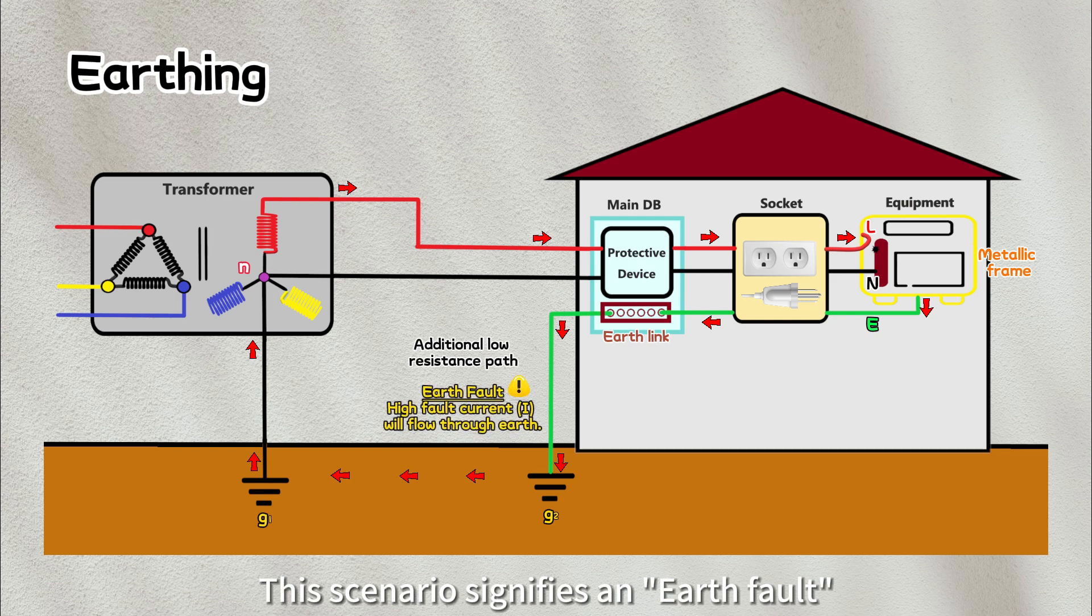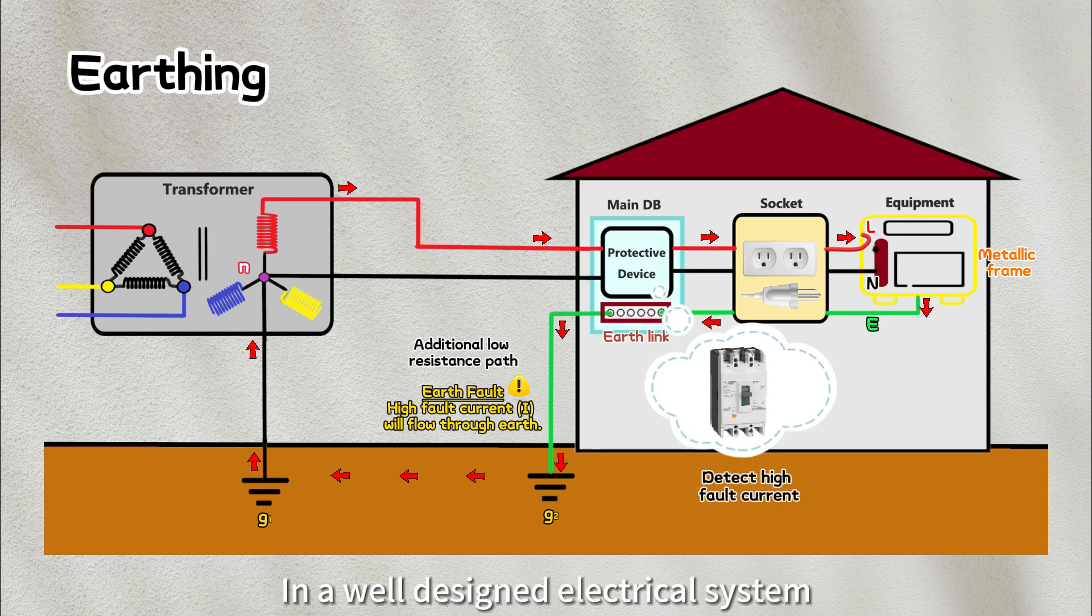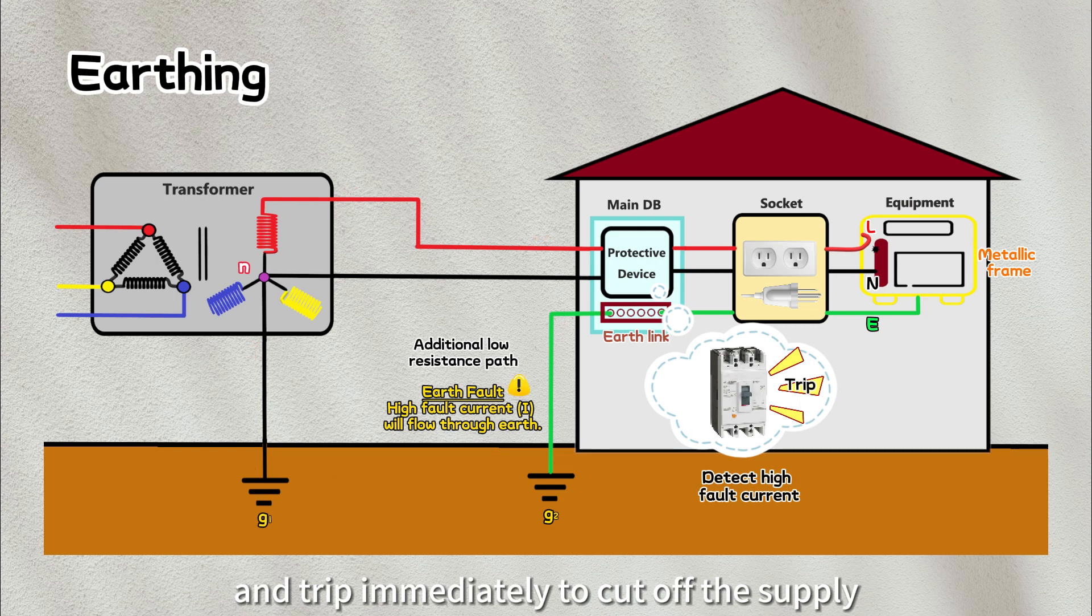This scenario signifies an earth fault where the current flows through the earth wire instead of the neutral wire. In a well-designed electrical system, the protective device will detect this fault and trip immediately to cut off the supply, significantly reducing the risk to humans and connected equipment.